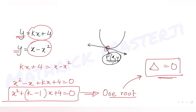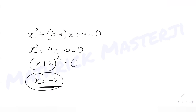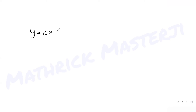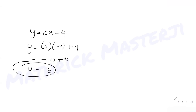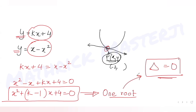With x = -2, we substitute into y = kx + 4. Using k = 5 and x = -2: y = 5 times (-2) plus 4 = -10 + 4 = -6. So the coordinates of point P are (-2, -6).